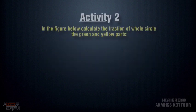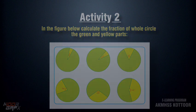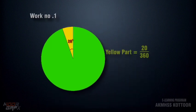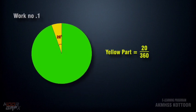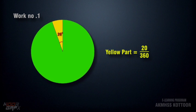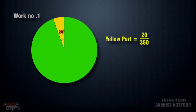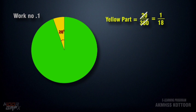Move to activity number 2: calculate the fraction of the whole circle that the green and yellow parts are. The yellow part is 20 degrees out of 360 degrees. For converting this into the smallest fraction, we divide the numerator and denominator by the greatest common factor. Here, 20 is the biggest common factor — 20 goes into 20 once and into 360, 18 times. So the smallest fraction is 1 by 18.